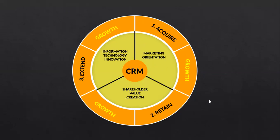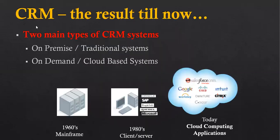Acquire, retain, and extend — this is the key philosophy of CRM. Two main types of CRM systems are available: first is on-premise, also known as traditional systems, and second is on-demand, also known as cloud-based systems. You can understand how technology changed with this diagram: in the 1960s we used mainframe, in the 1980s we used client-server systems or architectures.